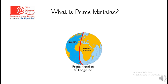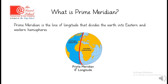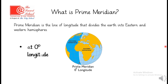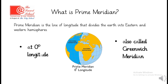What is prime meridian? Prime meridian is the line of longitude that divides the Earth into eastern and western hemispheres. You see this is the line of prime meridian. It divides the earth into eastern hemisphere and western hemisphere. An imaginary line that divides the earth into eastern and western hemispheres, it is at zero degree longitude. Prime meridian is at zero degree longitude and it is also called Greenwich meridian.